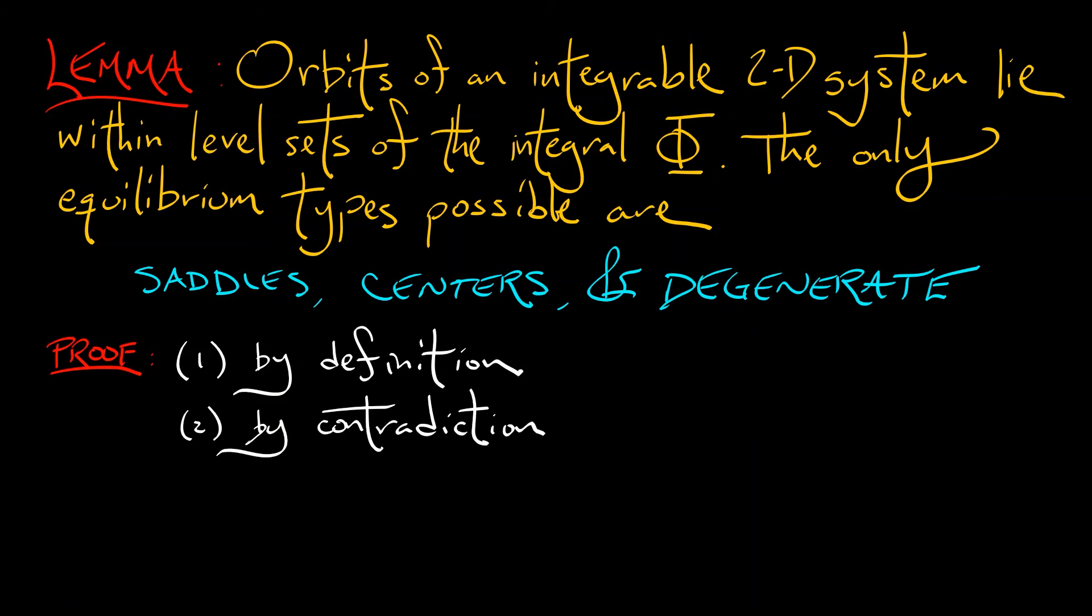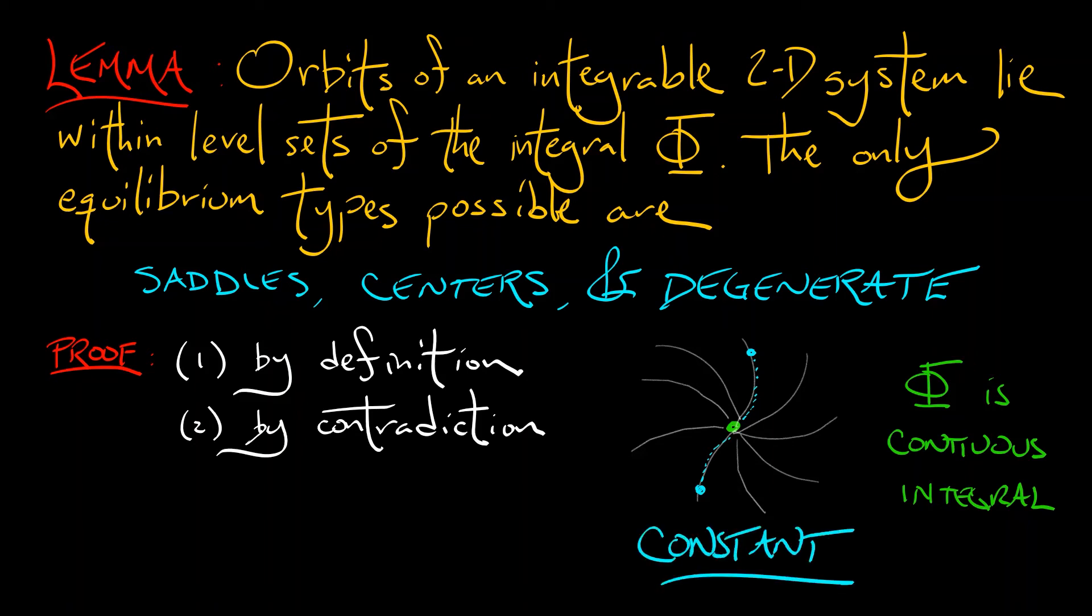The second item, the one constraining the equilibrium types, we can argue by contradiction. Consider a node, a source, or a sink. Spiral, non-spiral, doesn't matter. Because φ is continuous and constant along orbits, I can take any point in a neighborhood of this equilibrium and go either forwards or backwards in time to converge to the equilibrium. That implies, by continuity, by definition of an integral, that this function φ is constant in a neighborhood of this equilibrium. And recall, in order to be integrable, this φ has to be locally non-constant. That's the proof.